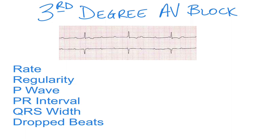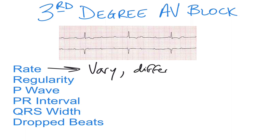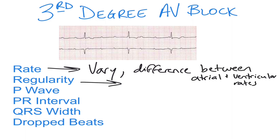In this EMT prep arrhythmia video we're going to talk about third-degree AV blocks. The rate of the third-degree AV block is going to vary quite heavily, and you're going to see a difference between the atrial and the ventricular rate. The rhythm itself is regular, but again you'll see a difference between the number of P waves and the number of QRS complexes.